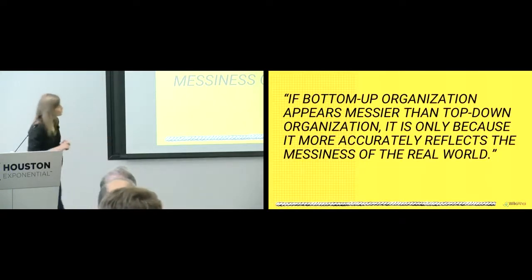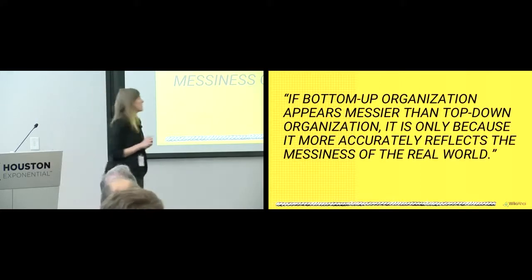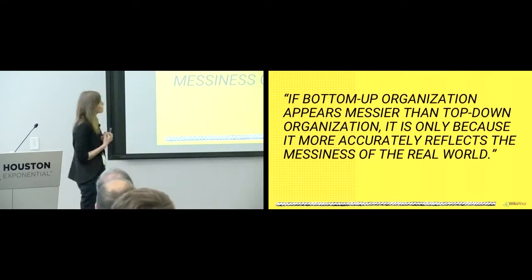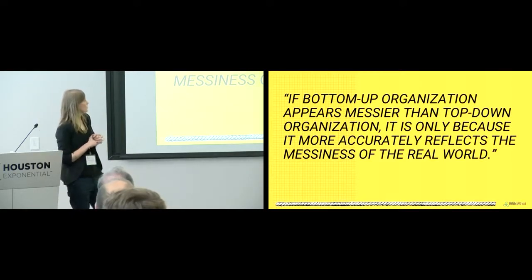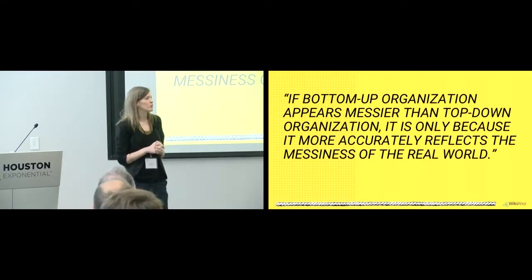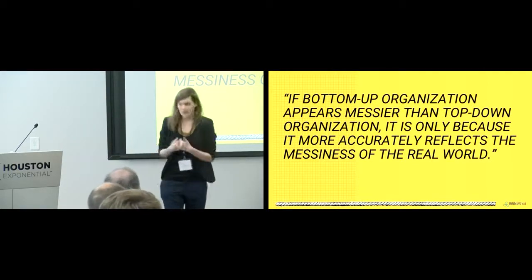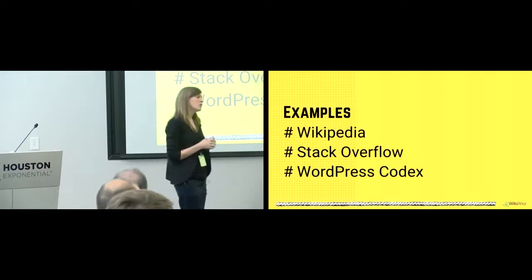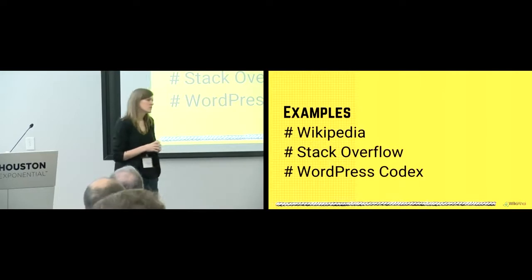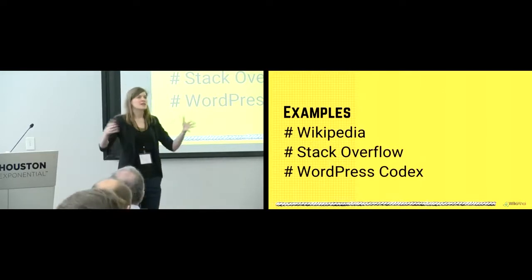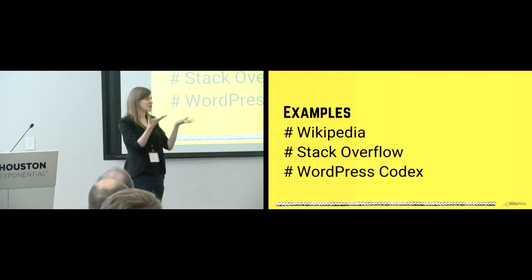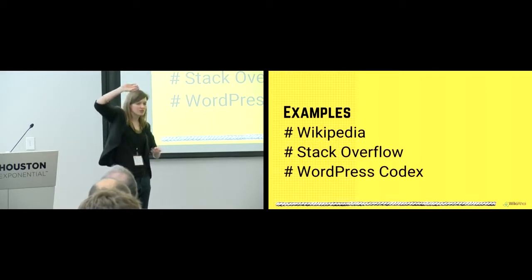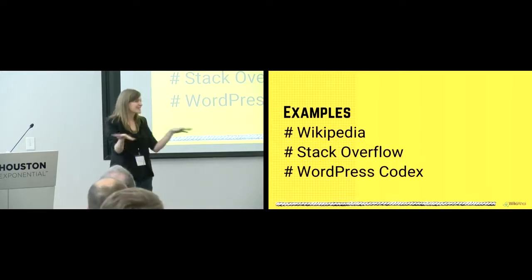A quote on bottom-up organization: 'Bottom-up organization appears messier than top-down organization — it is only because it is more accurately reflecting the messiness of the real world.' Top-down organization is the classic navigation for browsing; bottom-up is this every-page, page-one system. The real world isn't neatly structured. To summarize: bottom-up means you come in through search, while top-down means you go to the main page and navigate through it. With bottom-up architecture, you have bottom-up navigation — lots of hyperlinks and interlinking at the local level, as opposed to the global hierarchical menu.